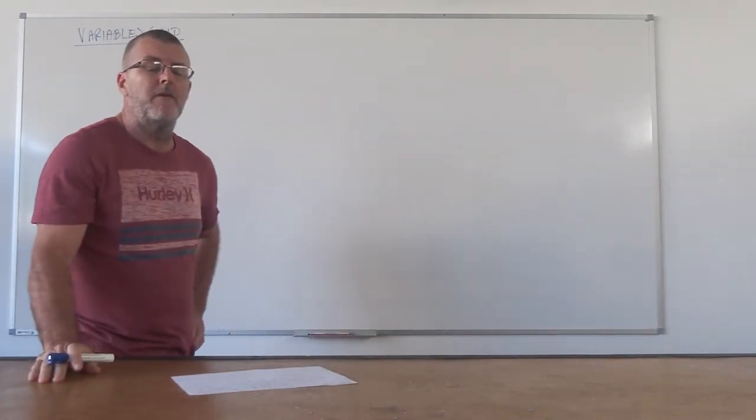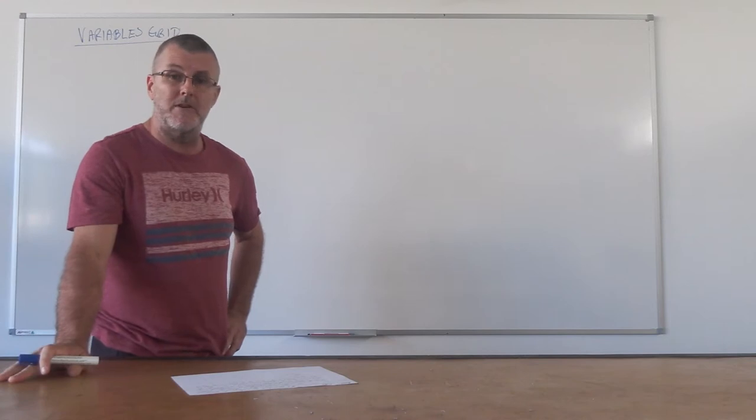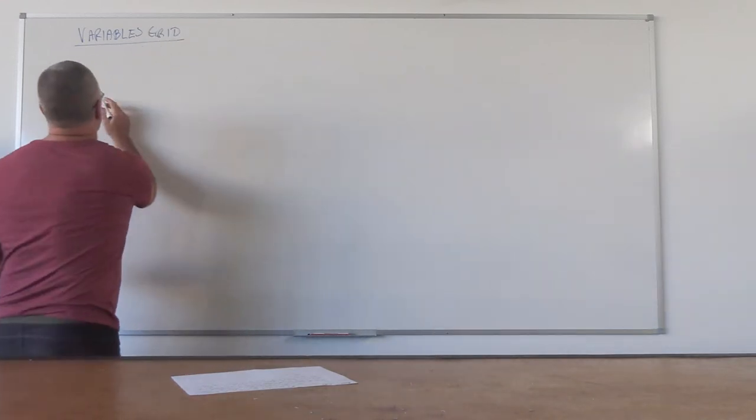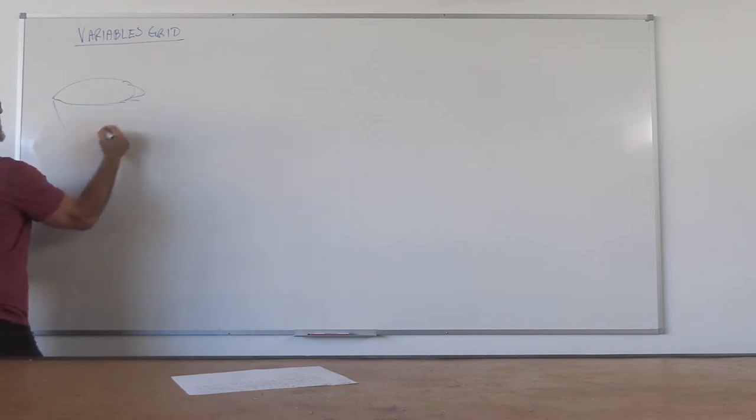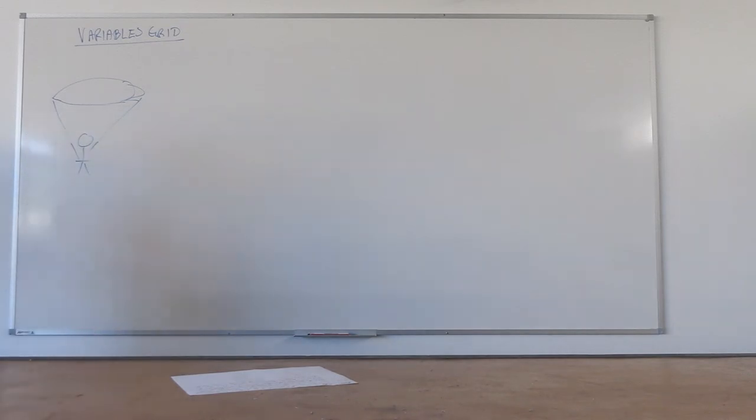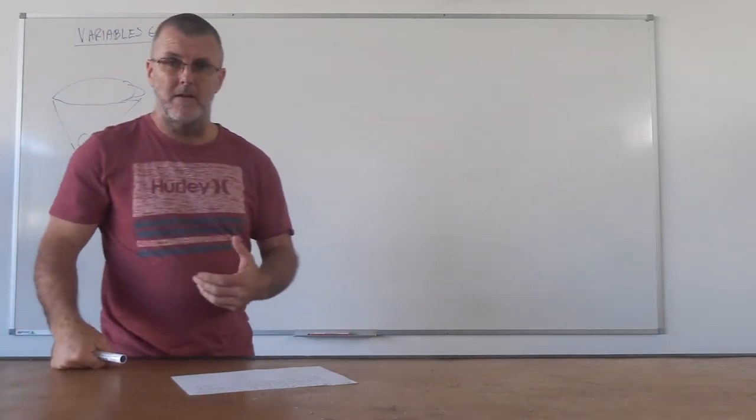So what we can look at for an example of the variables grid is a parachuter. In this case, we're just going to be looking at emulating a parachuter that's falling down to ground and we're going to look at some of the variables that are involved in parachuting.